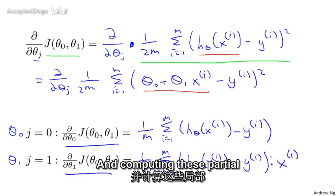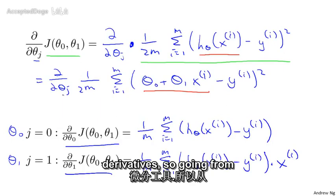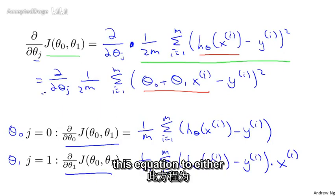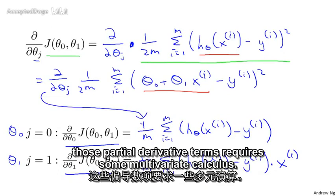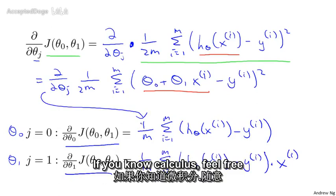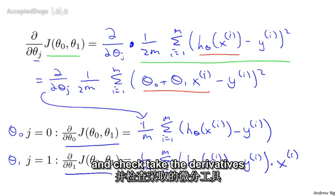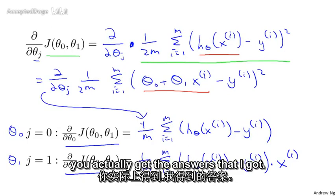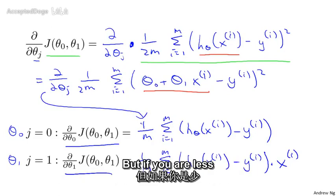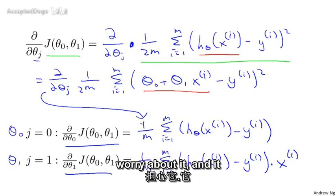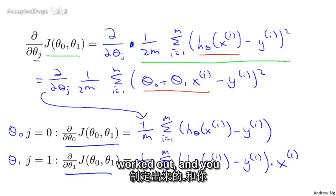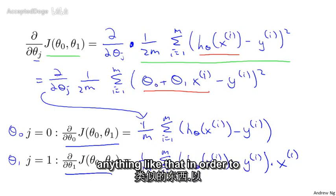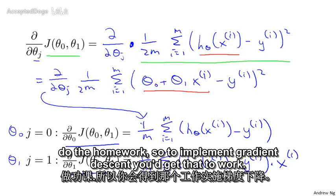Computing these partial derivatives, going from that equation to either of the equations, requires some multivariate calculus. If you know calculus, feel free to work through the derivations yourself and check that if you take the derivatives, you actually get the answers I got. But if you are less familiar with calculus, don't worry about it. It's fine to just take these equations that were worked out — you won't need to know calculus to do the homework or to implement gradient descent and get it to work.